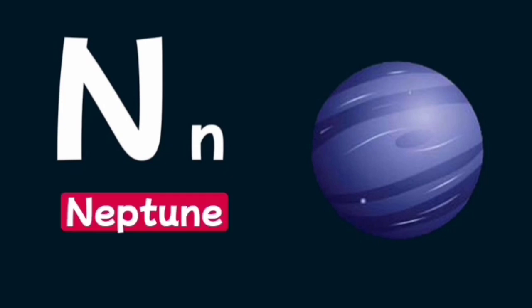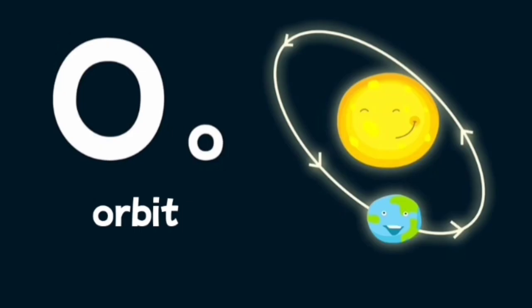N is for Neptune, a planet in our solar system that is farthest from the sun. O is for orbit, the path in which a planet circles the sun.